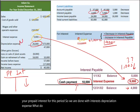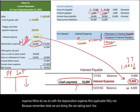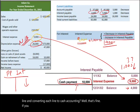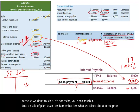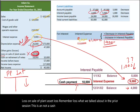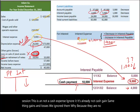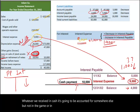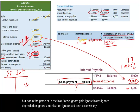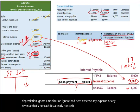Depreciation expense: not applicable — we don't touch it because it is already non-cash. Loss on sale of plant asset: ignore it, it's not a cash expense. Gains and losses are ignored because there are no cash gains or losses — whatever cash was received is accounted for elsewhere. Similarly, ignore amortization and bad debt expense. Any expense or revenue that is non-cash is already non-cash, so you do not convert it.